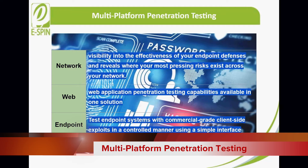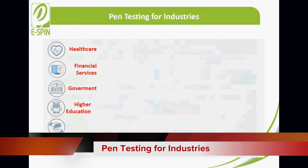For web, Core Impact Pro offers the most comprehensive web application penetration testing capabilities available in one solution. Only Core Impact integrates web application testing with network, endpoint, and wireless testing, enabling you to assess your organization's ability to detect, prevent, and respond to real-world multi-stage attacks. Endpoint — test endpoint systems with commercial-grade client-side exploits in a controlled manner using a simple interface. Endpoint penetration testing through Core Impact Pro lets you test desktops, laptops, and workstations for various vectors, in addition to gauging the effectiveness of antivirus, IDS, and other perimeter defenses.